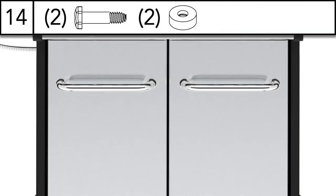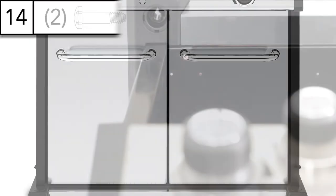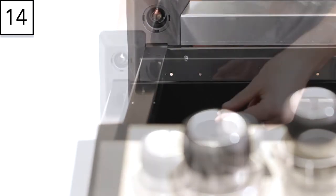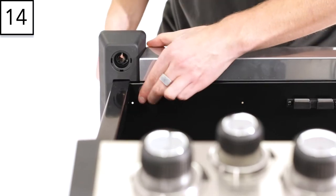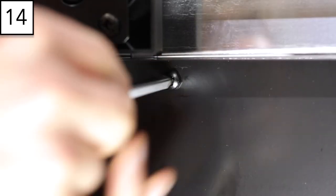Step 14. Prepare to install the cabinet doors. Insert a bolt through the base of the cabinet. Place a spacer over the bolt. Repeat for the other side.